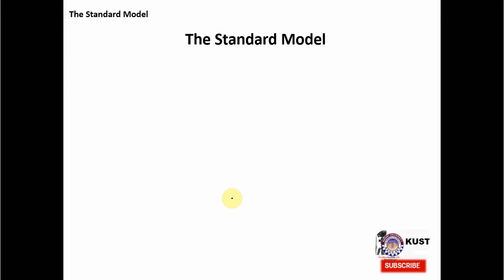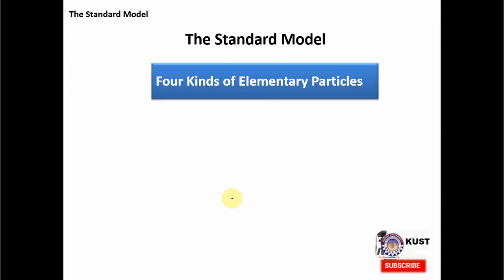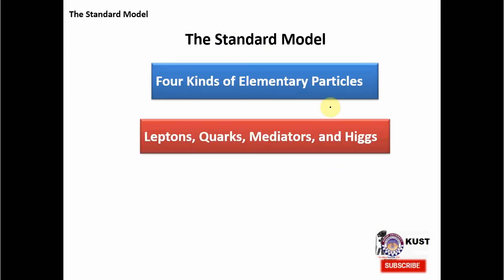In the Standard Model, there are four kinds of elementary particles: leptons, quarks, mediators, and Higgs.